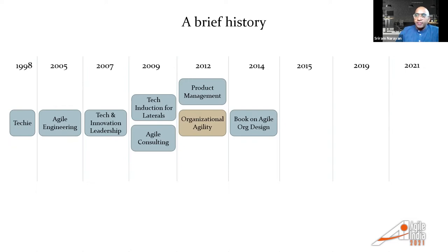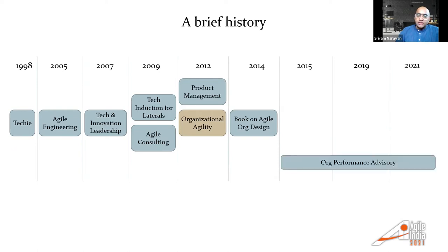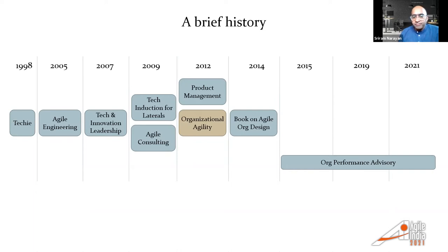The book's success led to a natural pivot in my career — from hardcore engineering to product management, to now advising organizations on improving the performance of their technology teams and technology organization in general. This would often happen in the context of an agile transformation or digital transformation program, but more generally I was helping with improving organizational performance.